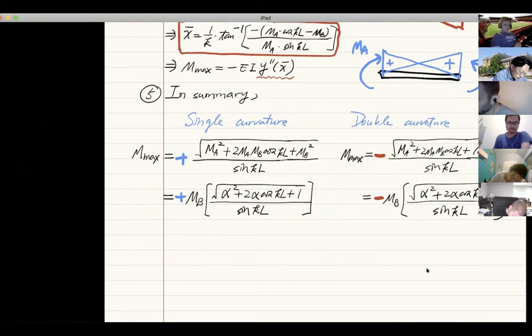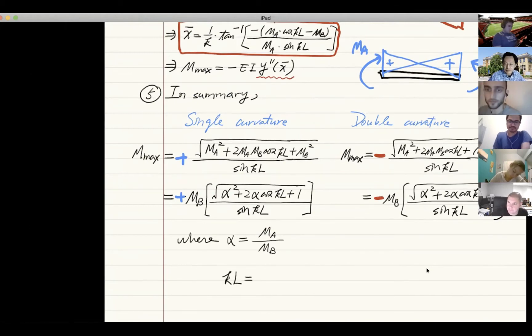Let's complete the definition. What is alpha? Alpha is just MA divided by MB—it's just a ratio.